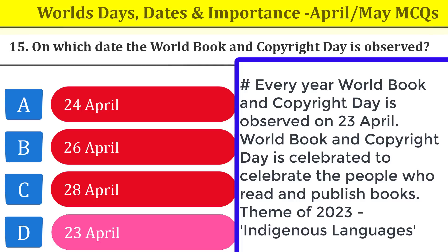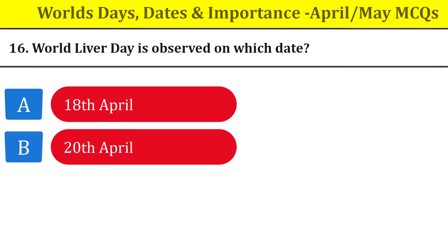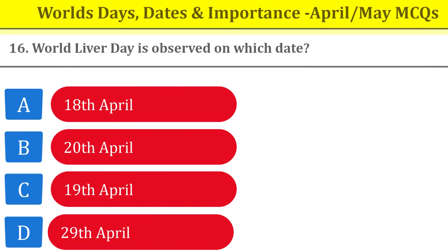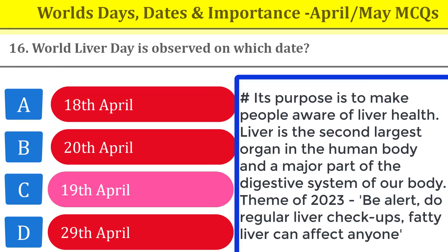Question number sixteen: World Liver Day is observed on which date? It is observed on 19th April. Its purpose is to make people aware of liver health. The liver is the second largest organ in the human body and a major part of the digestive system. The theme of 2023 is 'Be Alert, Do Regular Liver Checkups — Fatty Liver Can Affect Anyone.'